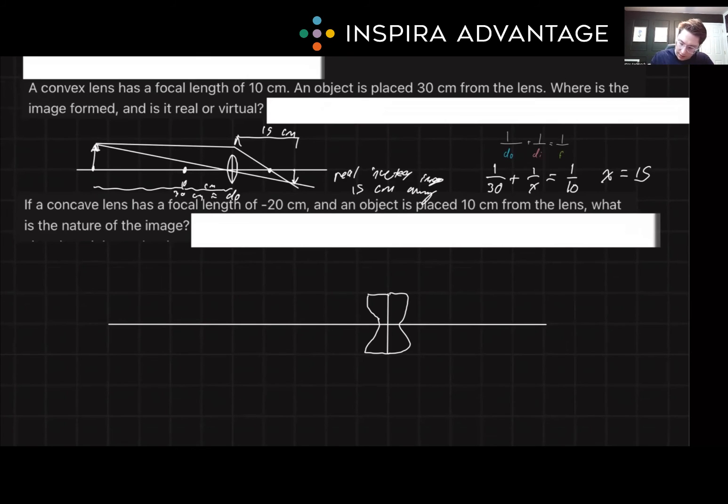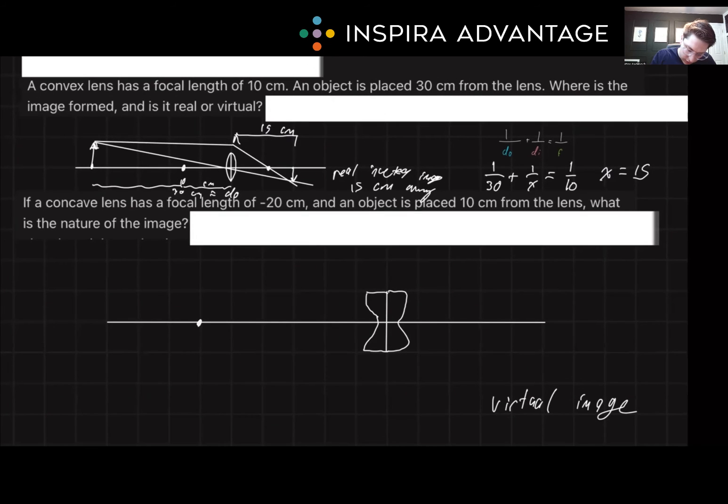Diverging will make things go away. So immediately we can say this is a virtual image. Don't need to do anything else to figure that out because we have memorized it's virtual. But we'll prove it just in case. So let's say our focal length is here. This is 20 centimeters and the object is going to be halfway then at 10 centimeters. And let's assume that our object is right side up.